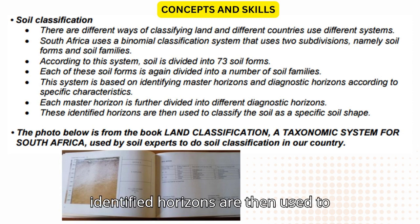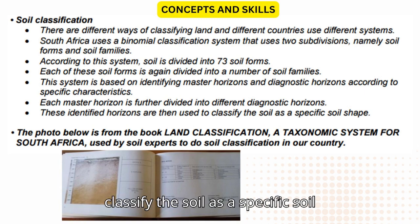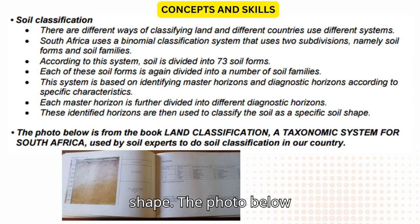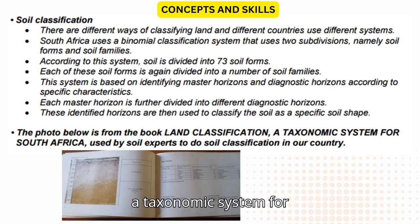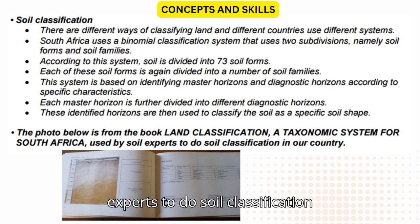These identified horizons are then used to classify the soil as a specific soil form. The photo shown is from the book Land Classification, a taxonomic system for South Africa, used by soil experts to do soil classification in our country.